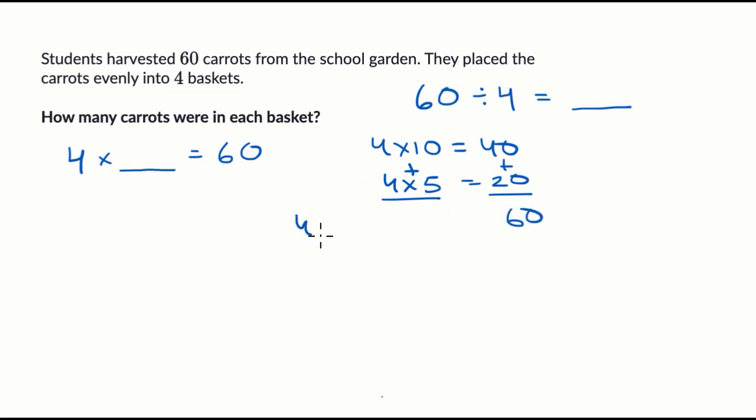So I could write this as 4 times 10 plus 4 times 5. Well, another way to think about this is, this is the same thing as 4 times 10 plus 5, because if we just use the distributive property.